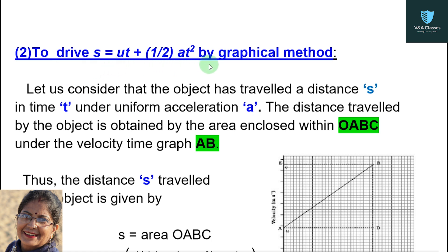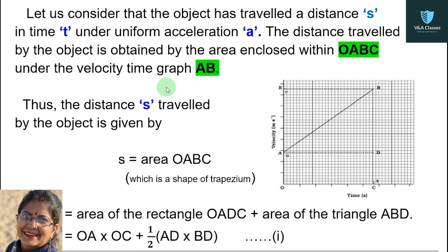Now the second equation: to derive S equals ut plus half at squared by graphical method. Let us consider that the object has traveled a distance S in time T under uniform acceleration A. The object is still moving with uniform acceleration, and S is the distance it travels in time T. The distance traveled by the object is obtained by the area enclosed within O, A, B, C under the velocity-time graph.